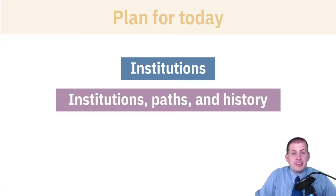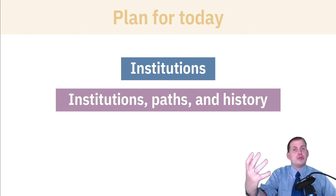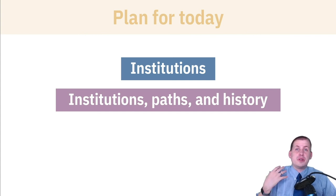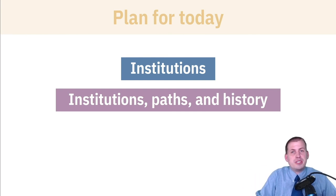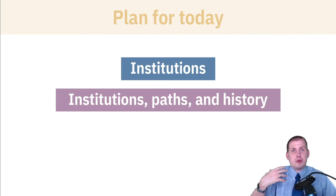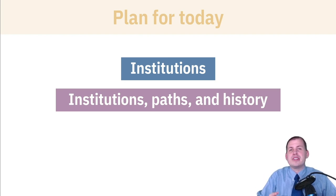Then we'll look at the relationship between institutions and history — how history shapes the institutions that we face. This is especially important from a management perspective. Often when you get into a new position or a new job, you'll have all sorts of cool ideas about how to run it effectively, based on the skills you're learning in your MPA and MPP degree. But as you try to implement those new ideas, you're going to run into roadblocks. In part, that's because of history and an idea called path dependency — how previous history shapes the institutions, norms, and rules that we have today.